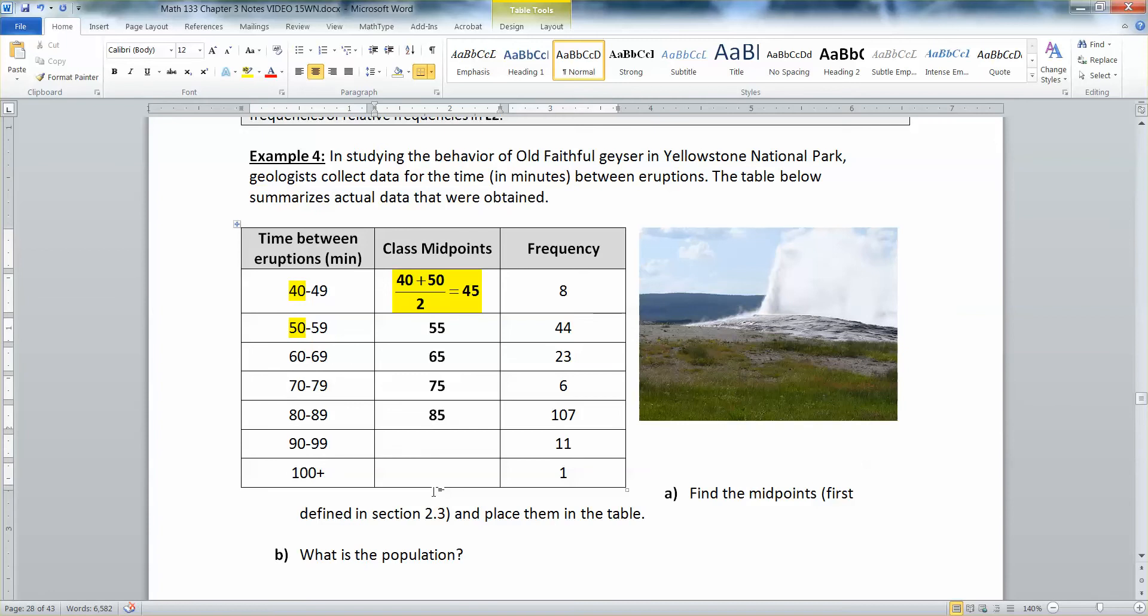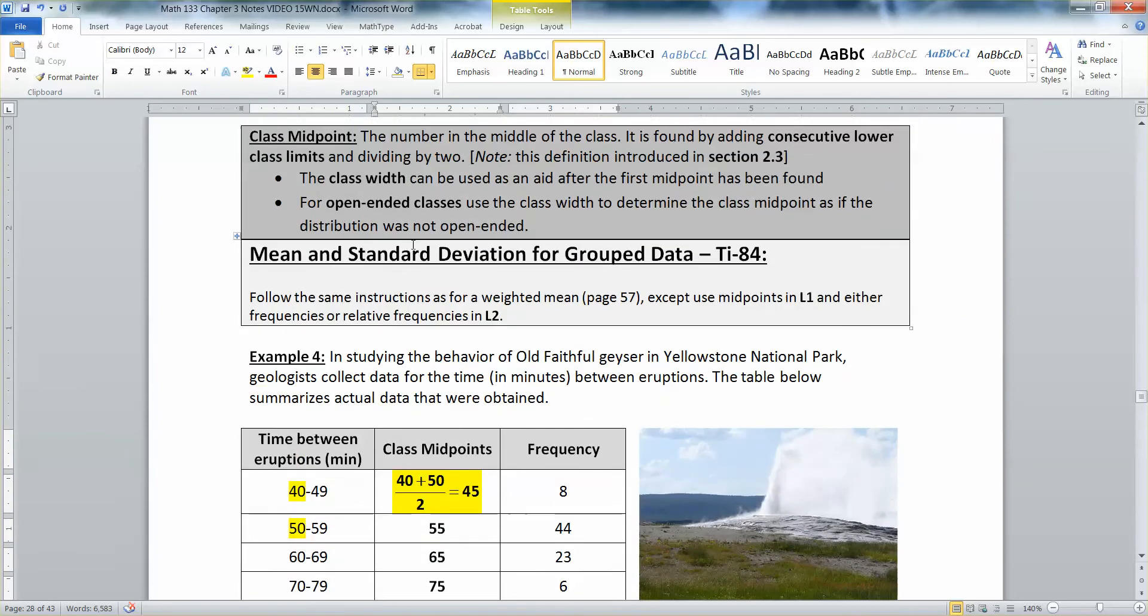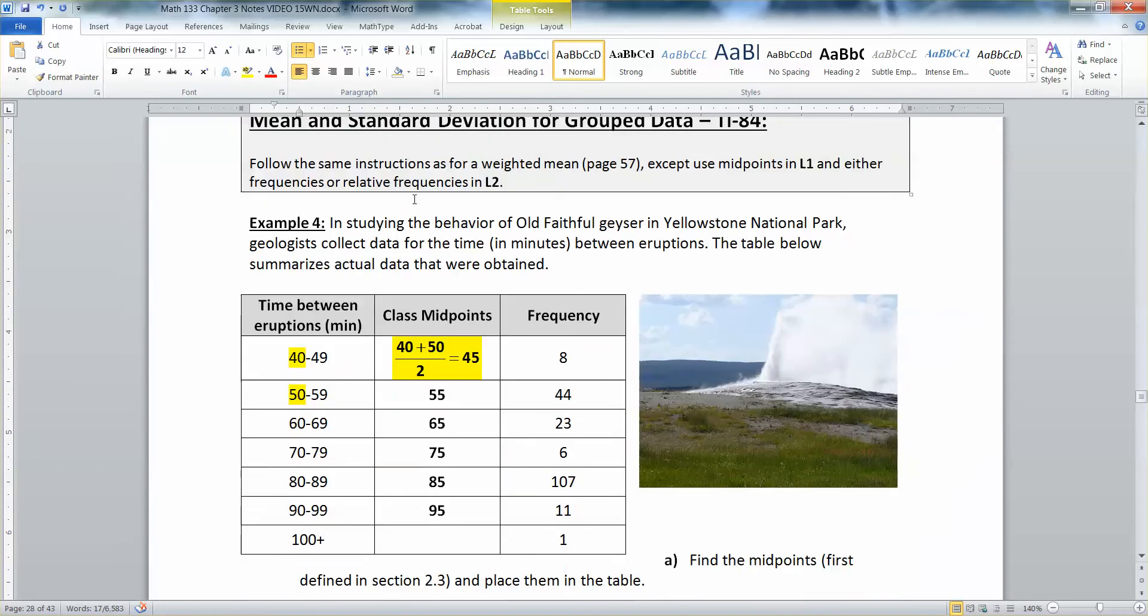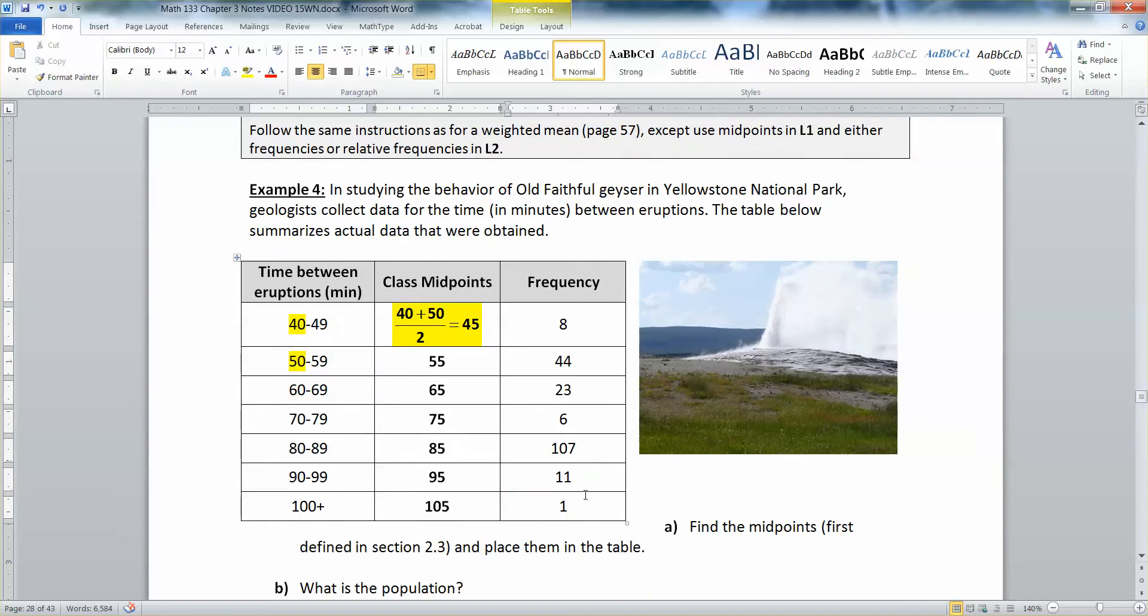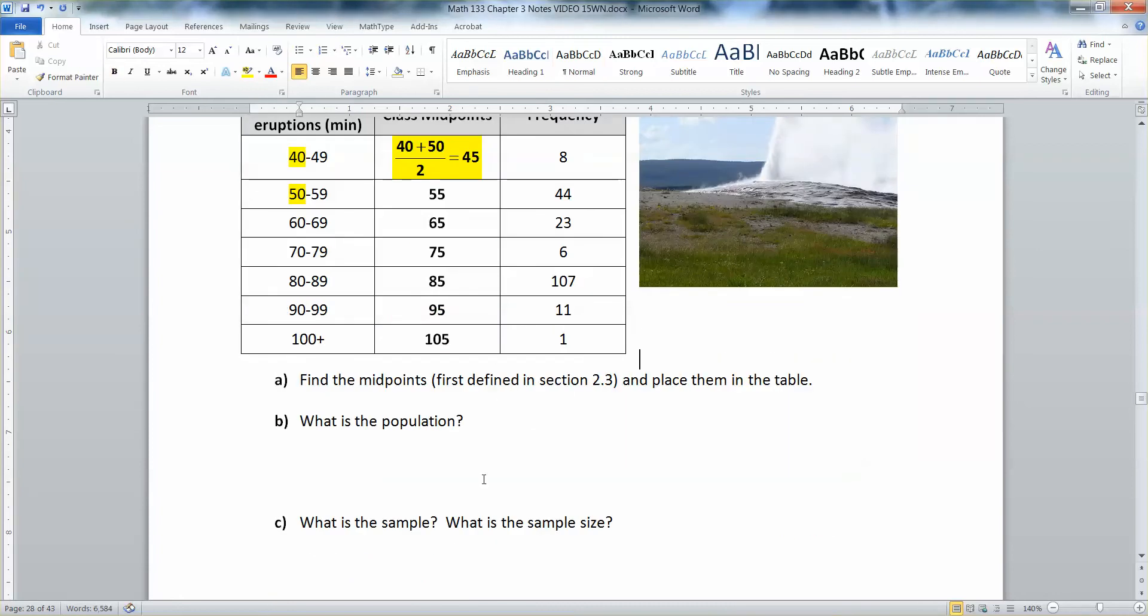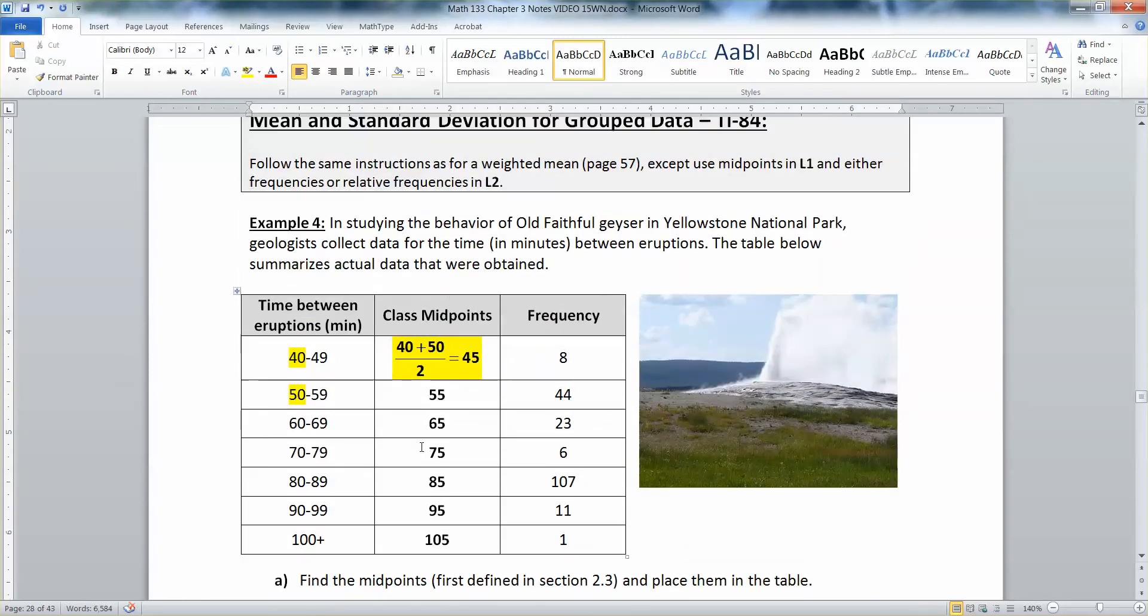And then the last class is an open-ended class. Open-ended means that it is just 100 and beyond, right? 100 plus. They do that a lot with ages too sometimes. And what I'll do is I'll just treat it as if the class is continuing, that width is continuing on. So 105 is what I'll call it. Now I need to know the total here. So I found the midpoints. I will need it eventually down here.